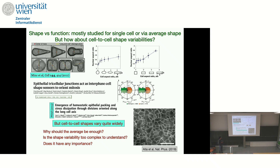This question of shape versus function has been studied mostly at the single cell level or at the level of averages. For example, in work appearing in Cell in 2011, they studied C-archin cells on patterned substrates and studied division plane orientation as a function of cell shape. But if you look at a snapshot of a cell monolayer, the cell-to-cell shape varies quite widely. The question arises: why should the average be enough? Is the shape variability too complex to understand, or does it have any importance, or is cell shape variability simply biologically unimportant noise?